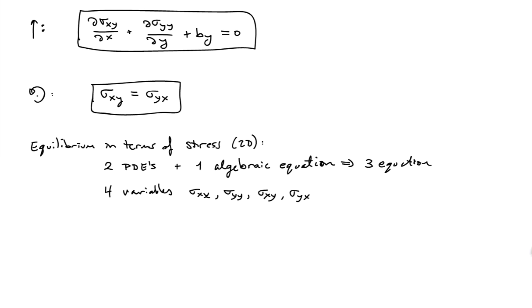And so these are the three equilibrium equations that we have in 2D. If we count them, we'll see that we have two partial differential equations plus one algebraic equation. So there are three equations in total for equilibrium, as we would expect for a two-dimensional problem.